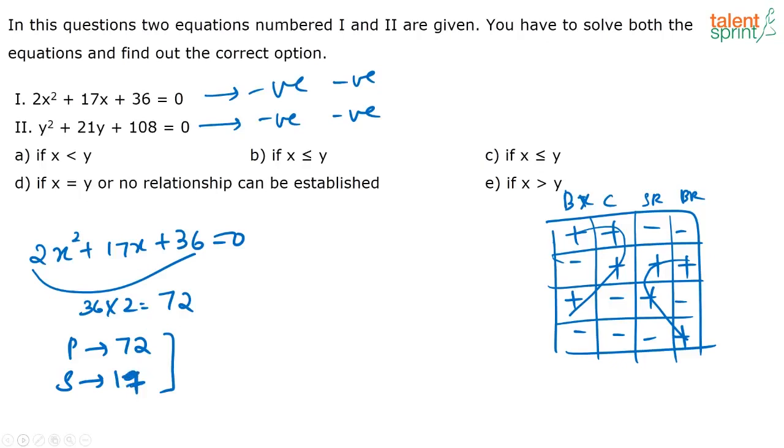Product of two numbers is 72, sum is 17. So what are the only possible numbers? It is 8 and 9, correct. Now, what is the coefficient of x²? It is 2. So divide: 8 by 2 and 9 by 2. So 4 and 9/2.